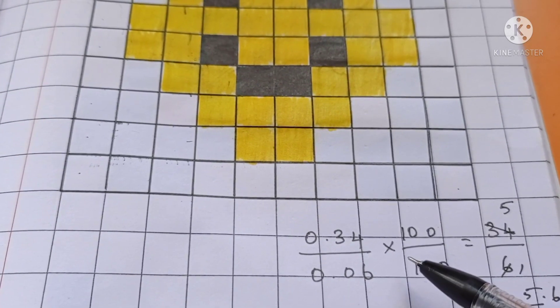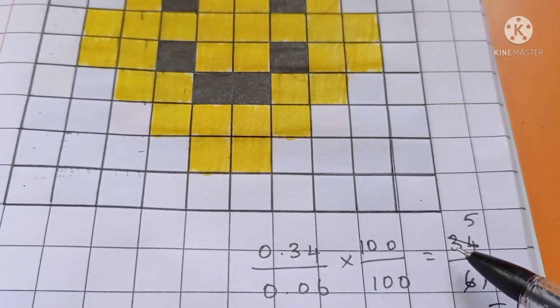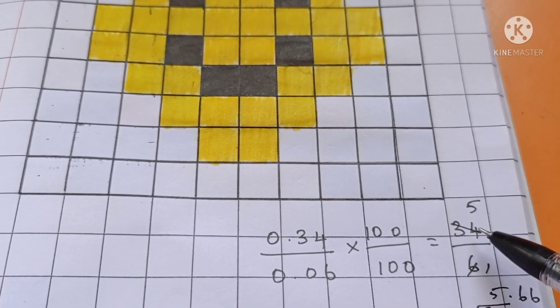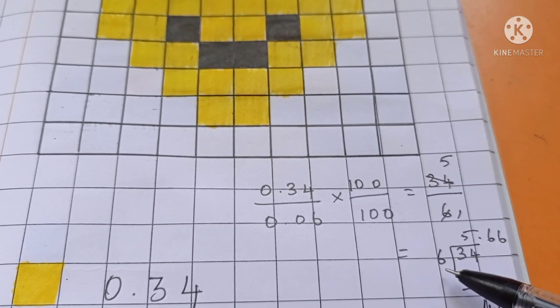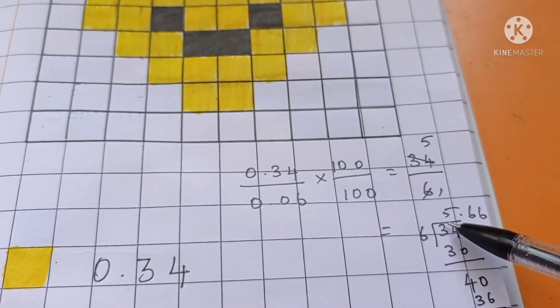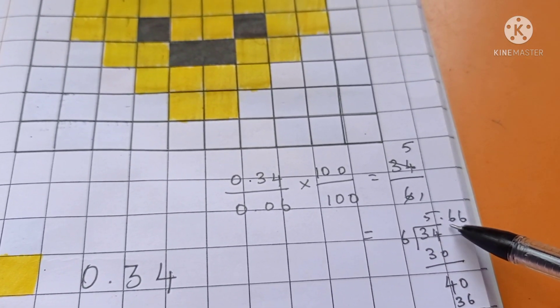Both the numbers we have to multiply by 100. If we multiply we will get the whole number 34 by 6. 34 by 6. So if you divide 34 by 6, we will get answer 5.00.